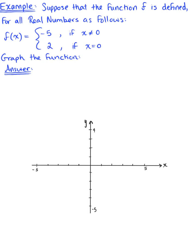Suppose that the function f is defined for all real numbers as follows. Here we have a piecewise function, f of x, where f(x) equals negative 5 if x does not equal 0, which we'll call equation 1. And f(x) equals 2 if x equals 0, we'll call that equation 2.